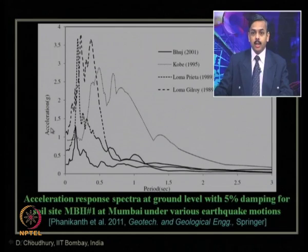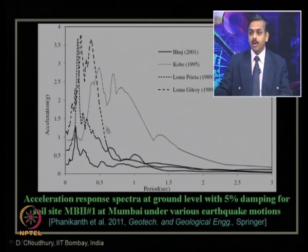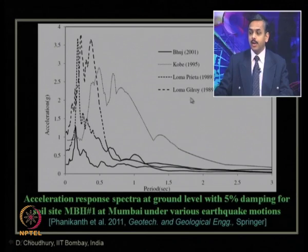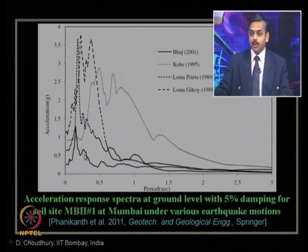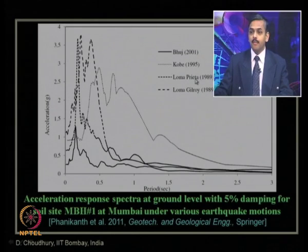Another output is spectral acceleration versus period variation at a particular borehole at Mangalbari site in Mumbai, considering 5% damping using a single degree of freedom mass-spring-dashpot system. Results are obtained for four input motions: Bhuj, Kobe, Loma Prieta, and Loma Guillory. The peak spectral acceleration and its corresponding period indicate which structure types are most vulnerable at that site.